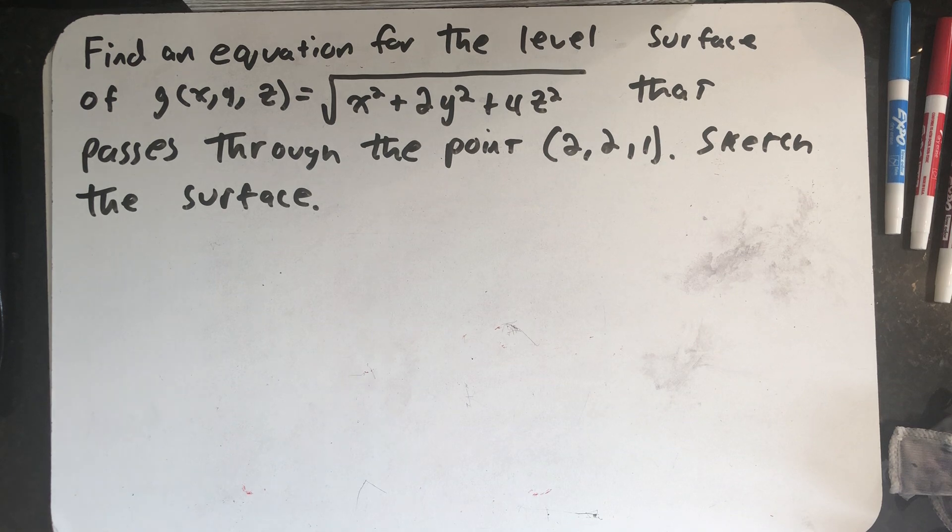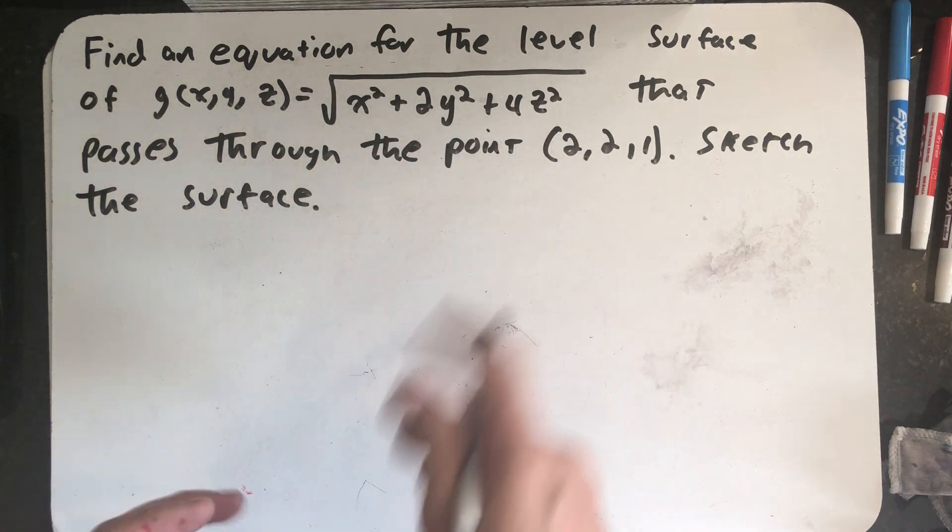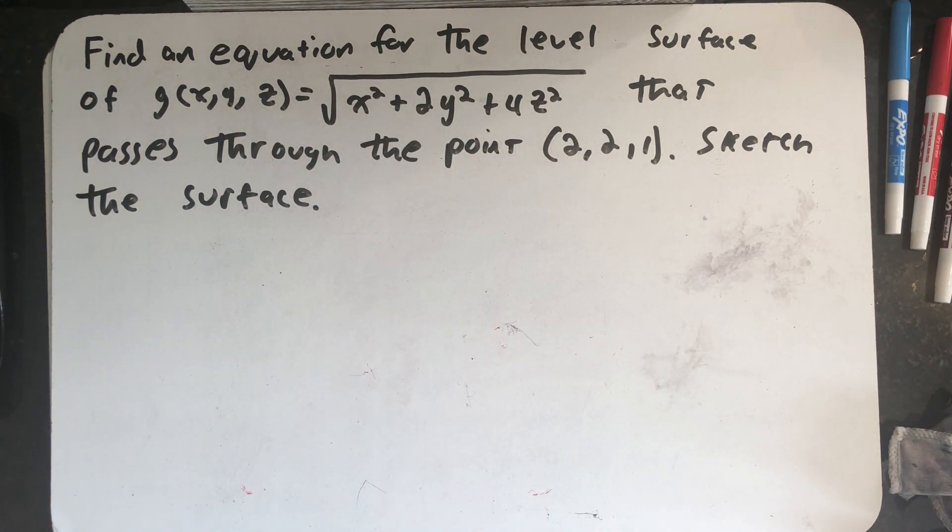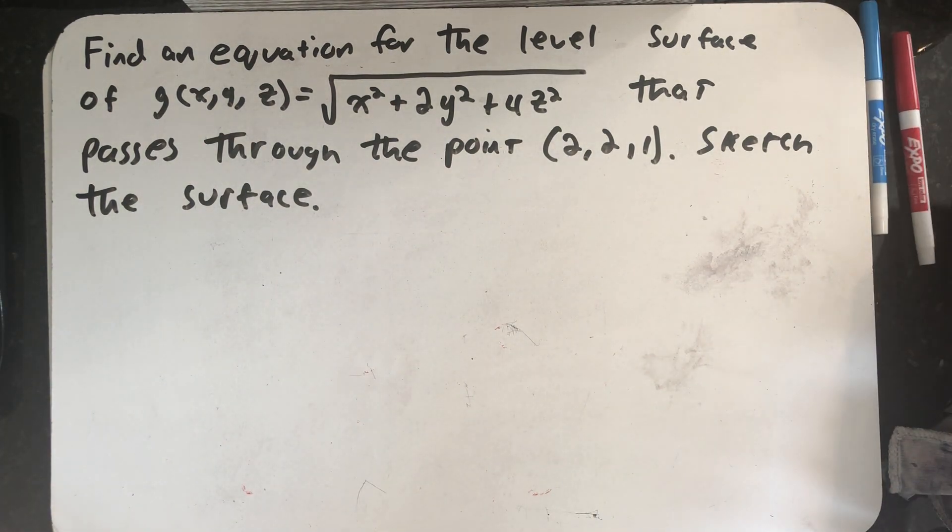Well, right away I need to figure out what level surface I'm thinking about. Level surfaces are surfaces in the domain of a function on three variables on which we take on a constant value. Well, if I'm going to go through the point (2, 2, 1), then I need to find out what value of the function happens at (2, 2, 1).